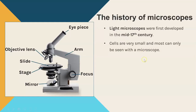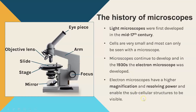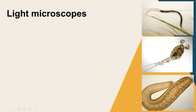Cells are very very small - the basic building blocks of all organisms - and most of them can only be seen with a microscope. Microscopes continued to develop and it was in the 1930s that the electron microscope was developed. The electron microscope has a much higher magnification and resolving power compared to the light microscope. This meant we were now able not just to see the cells but to see the inside of cells - what we call the sub-cellular structures.